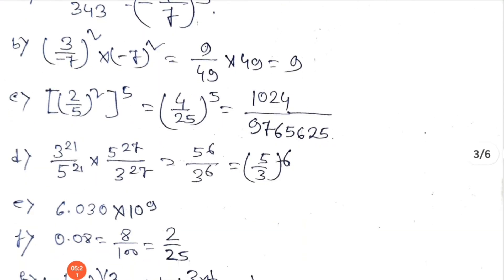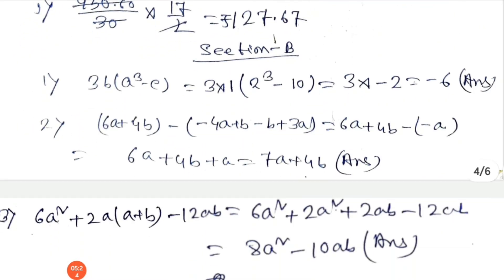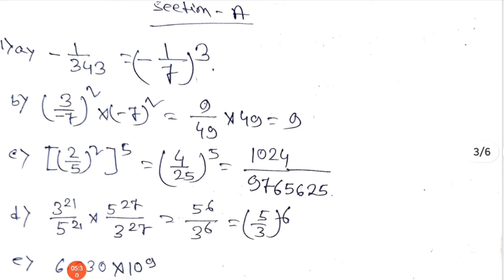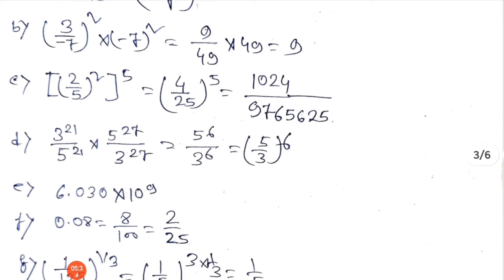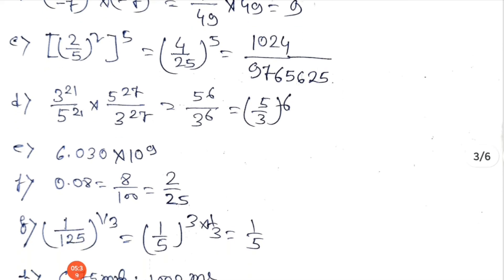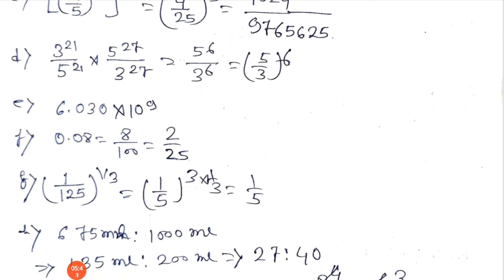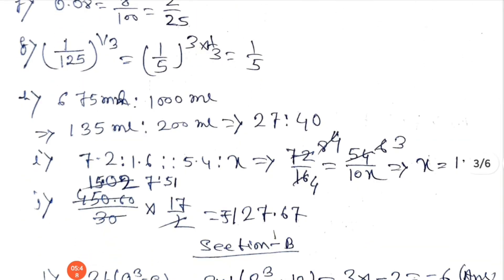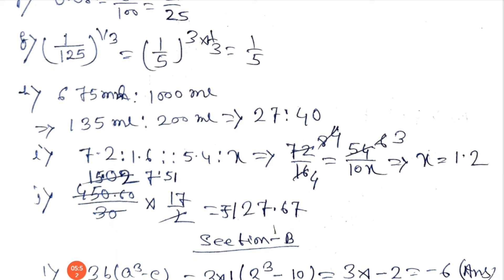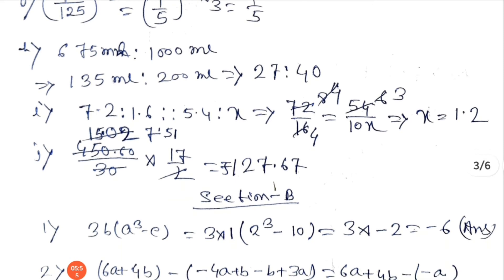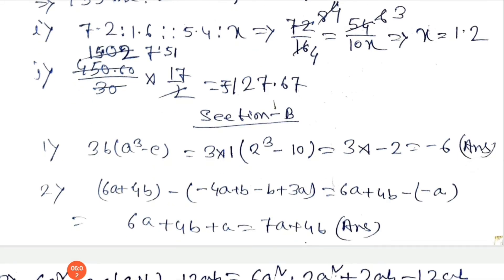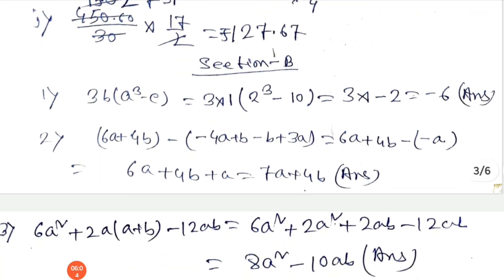Now the short question answers. Question 1 answer: minus 1 by 7, whole cube. Question 2 answer: 9. Question 3 answer: 10 to the power 4, 97,656.25. Question 4 answer: 5 by 3 to the power 6. Question 5 answer: 6.030 into 10 to the power 9. Question 6 answer: 2 by 25. Question 7 answer: 1 by 5. Question 8 answer: 67.27 is to 14.1 is to 2. Question 9 answer: 1 to 7.67.